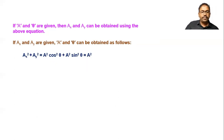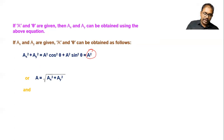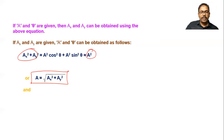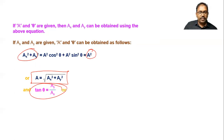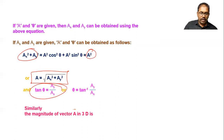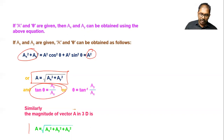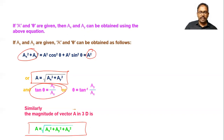So the magnitude a can be written as the square root of ax² plus ay². For direction, tan θ equals ay divided by ax. In the three-dimensional case, we add the az term, giving the magnitude formula as the square root of ax² plus ay² plus az².